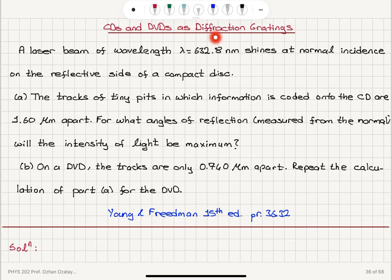CDs and DVDs as diffraction gratings. A laser beam of wavelength 632.8 nanometers shines at normal incidence on the reflective side of a compact disc.